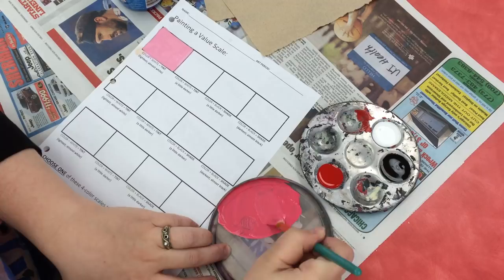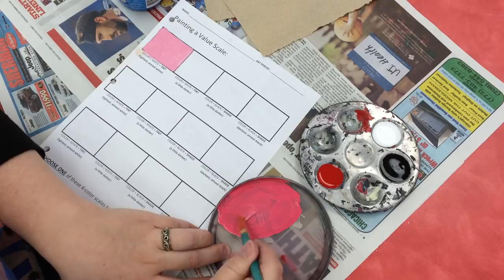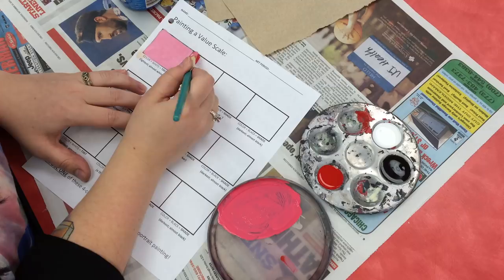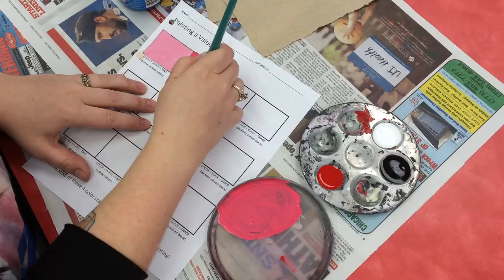You can see it makes kind of a dark pink sort of shade. Make sure I get all my color mixed in. Then I'm going to paint that down. You can see a definite change from my first color to my second color.